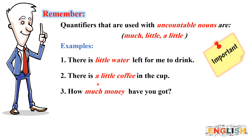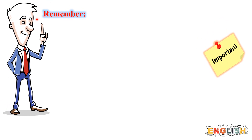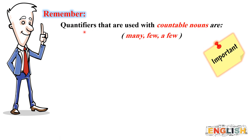Use 'should' or 'shouldn't' and the prompts in brackets to complete the sentences. Here you have five sentences and you have given prompts for each sentence. You are going to use 'should' or 'shouldn't' and the given prompts to work out this task. I will do the first as a model example for you. 1. Kareem's got a fever. He should stay in bed.